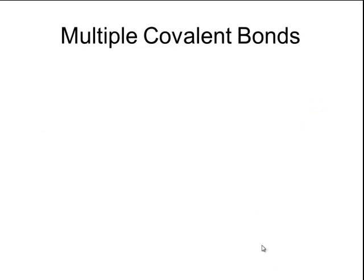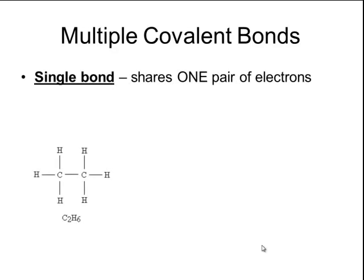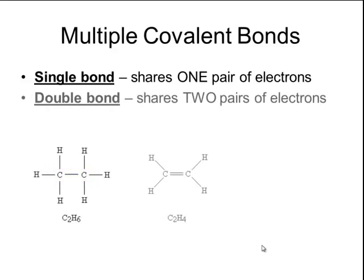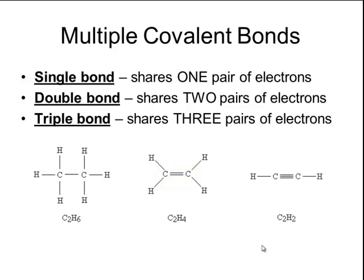There are many compounds that combine together to form molecules with multiple covalent bonds. In the previous examples, all of the molecular compounds had single bonds, where two atoms share one pair of electrons, represented by a single dashed line. It is also possible to have a double bond, where two atoms share two pairs of electrons, represented by two lines between two atoms. Lastly, it is possible to have triple bonds, which share three pairs of electrons and have three dashes between two different atoms.